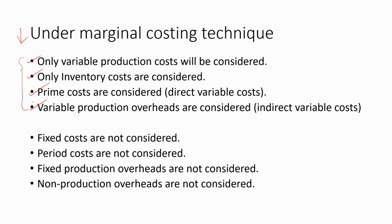All these points describe the variable production costs. Fixed costs are not considered. Period costs are not considered. Fixed production overheads are not considered. Non-production overheads are not considered. All of these are costs which cannot be considered under Marginal Costing — they are non-variable or non-production costs. Simply, under Marginal Costing, we can only consider variable production costs, whether direct or indirect, as long as they are production costs.